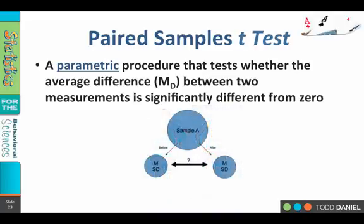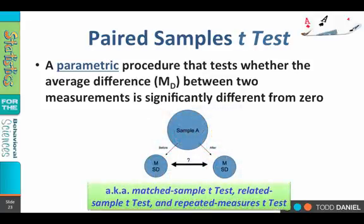When using a paired sample t-test, we have a before-and-after group, each of which has a mean and standard deviation, but they are drawn from the same sample. It's important to note that the paired sample t-test also goes by other names depending on how it is being used. You may hear it called a matched sample t-test, a related sample t-test, or a repeated measures t-test.